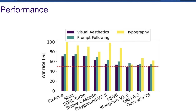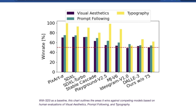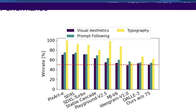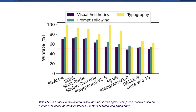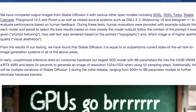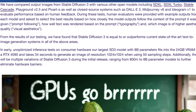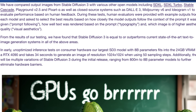Let's look at performance and win rate, which basically means how close these models got to what the user actually wanted. This chart shows performance across visual aesthetics, prompt following, and typography. SD3 as a baseline clearly wins out against basically all these competing models based on human evaluations across all three areas. It's also cool to see how actually good Midjourney v6 is with typography and how far we've come with models like SDXL. These were all measured with humans who decided what they thought was best.